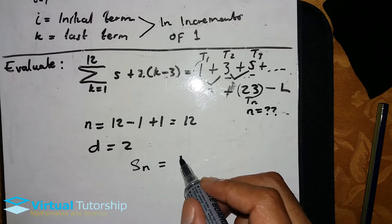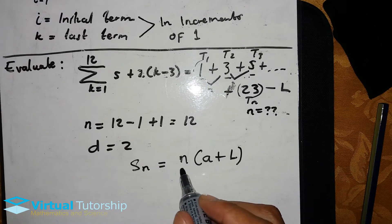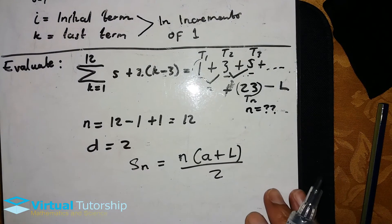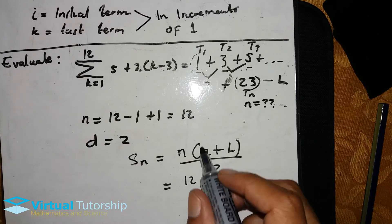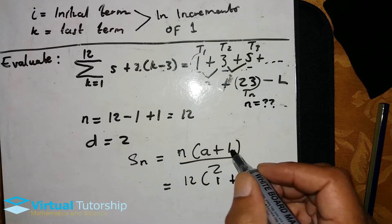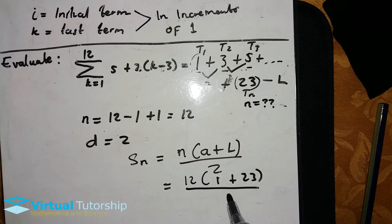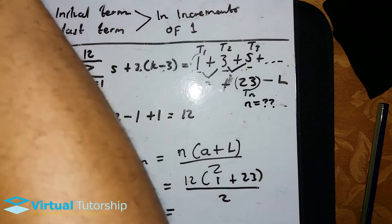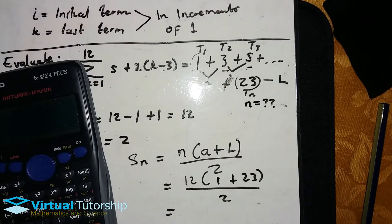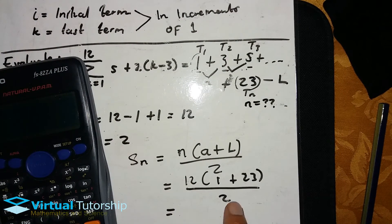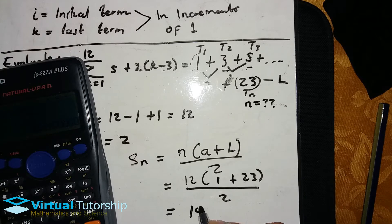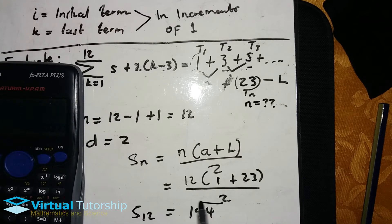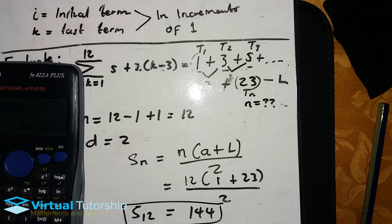So the sum of this, we evaluate using the sum formula: S_n equals n over 2 times (a plus l), where l is the last term. n is equal to what we calculated—it's 12. a, the initial term, is T1, and the last term is T12, which is 23. All divided by 2 is equal to 6 times 1 plus 23, which is 24. So the sum for the first 12 terms is equal to 144.